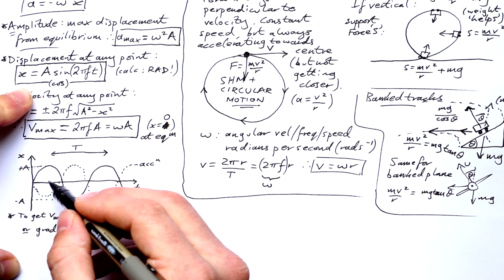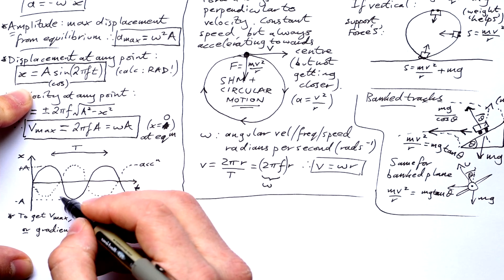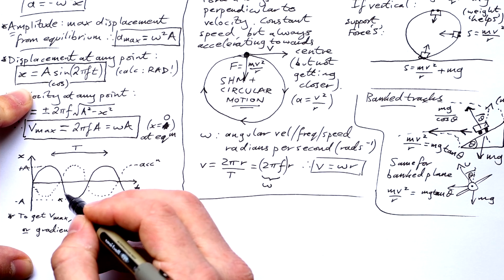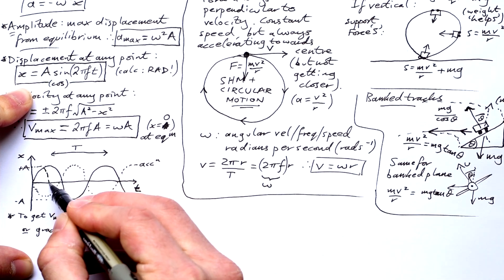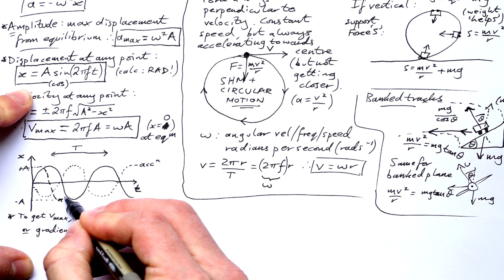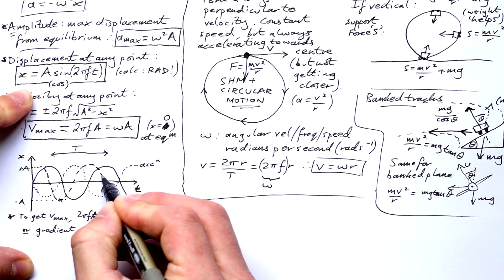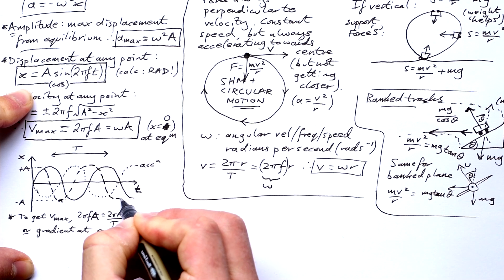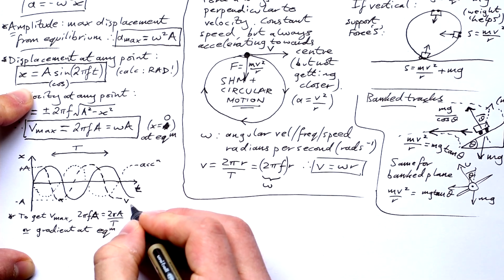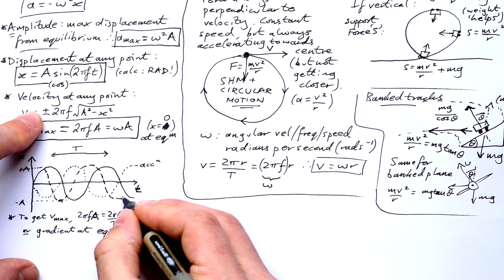Velocity, on the other hand, you need to be a bit careful. You need to think, okay, when it's going through equilibrium from positive to negative displacement, that's when we have maximum velocity, but in the negative direction. So I'll put a little cross there and then put a few crosses in and then you can start joining them up. So velocity is 90 degrees out of phase with both displacement and acceleration.